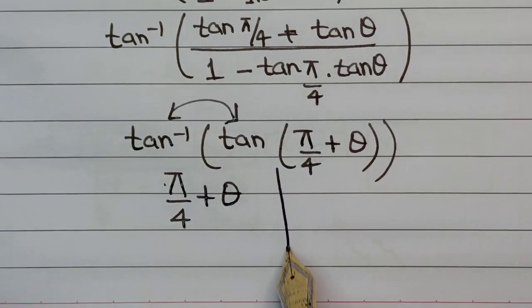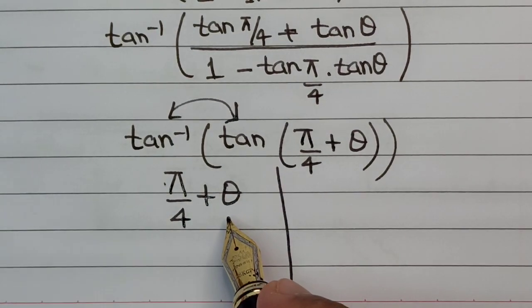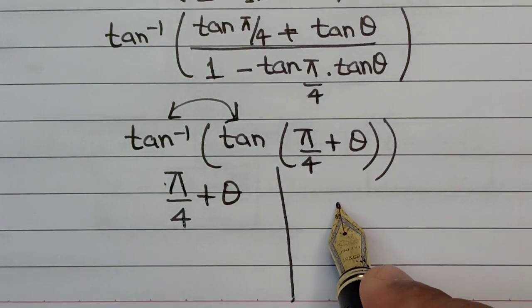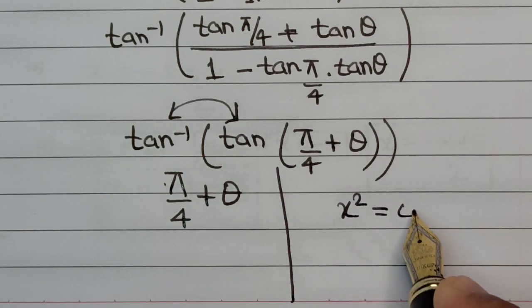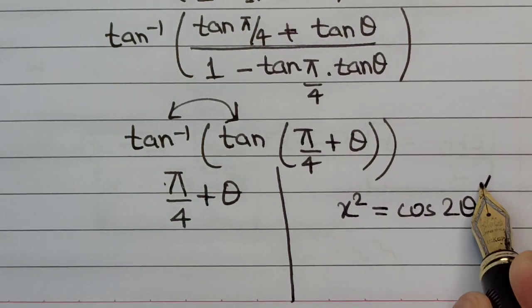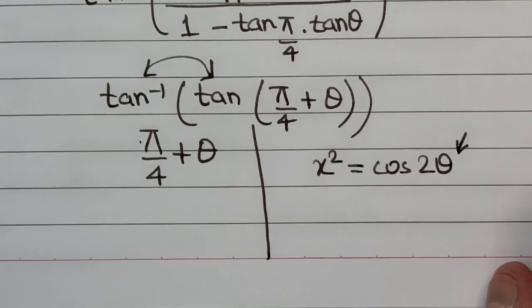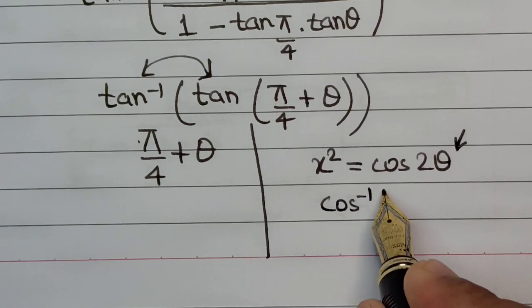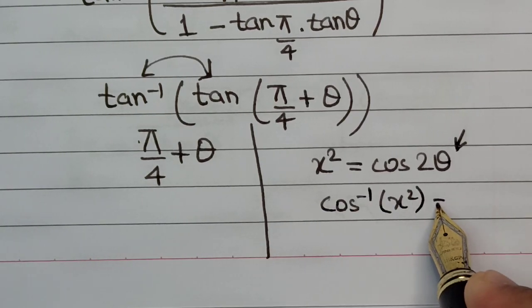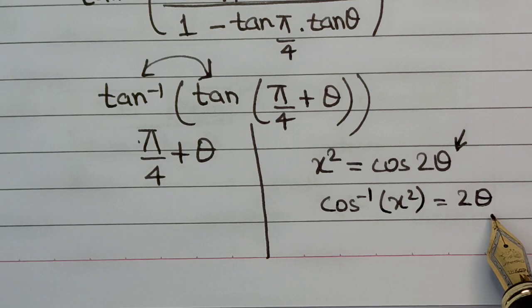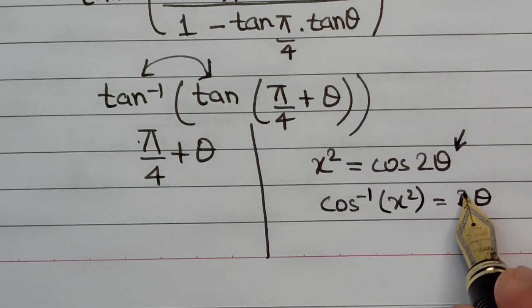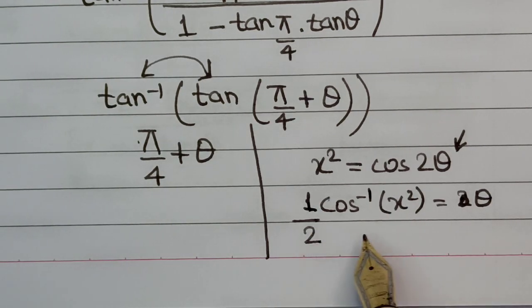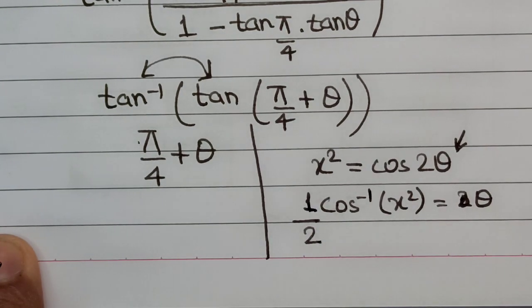We started with x² = cos 2θ. Taking cos inverse on both sides gives cos⁻¹(x²) = 2θ, so θ = (1/2)·cos⁻¹(x²).